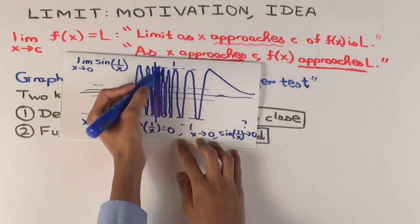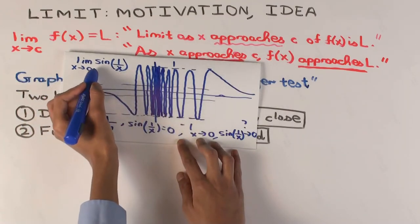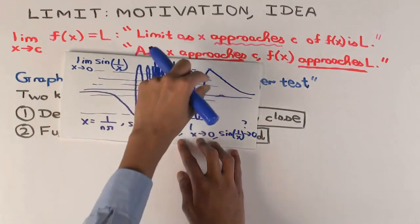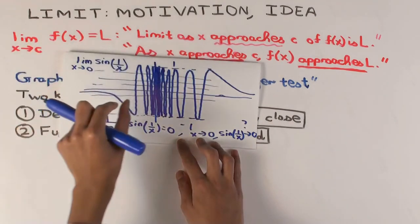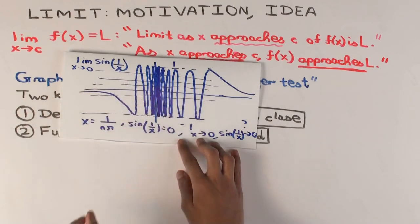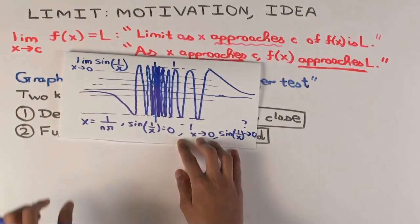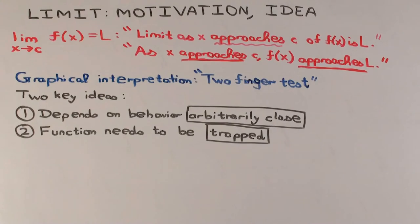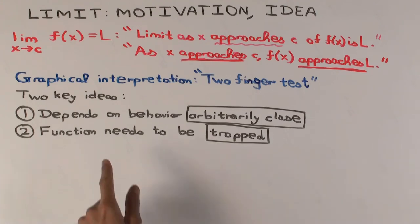Therefore sine of one over x does not have a limit at zero, because the function is oscillating too widely — you cannot trap it. You cannot trap the function values in a small horizontal strip around zero. The same logic applies to any other candidate value: the limit cannot be one-half either, because you cannot trap the function in a small horizontal strip about one-half as x approaches zero.